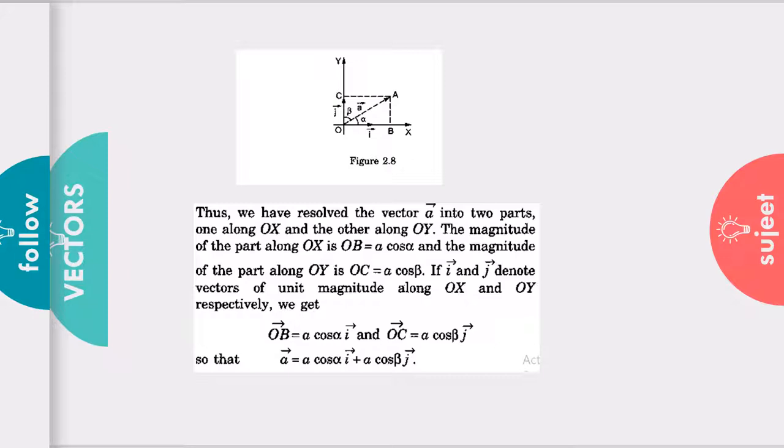So i vector is having the magnitude one and its direction is along the X-axis. And j cap or j vector is nothing but having the magnitude one and direction along the Y-axis.